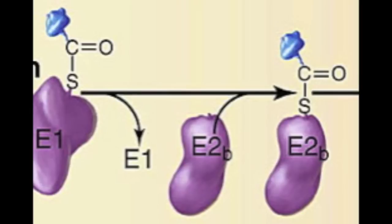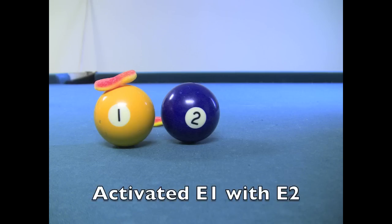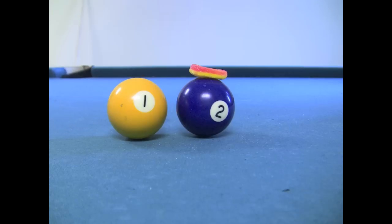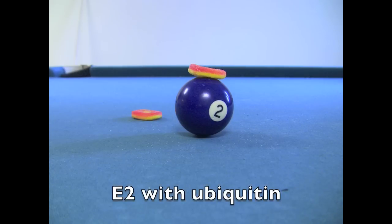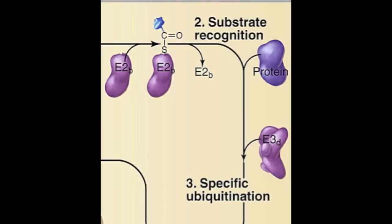In step two, activated ubiquitin is transferred from E1 to an E2 enzyme, also known as the ubiquitin conjugating carrier enzyme. E2 confers specificity to the ubiquitin.